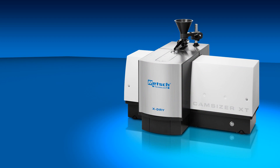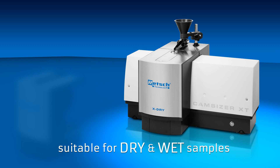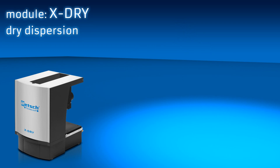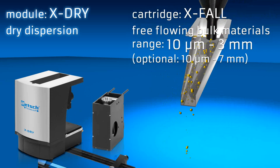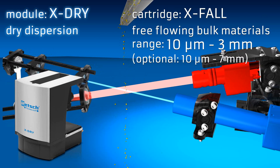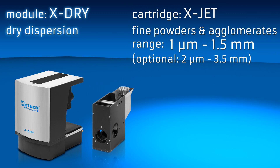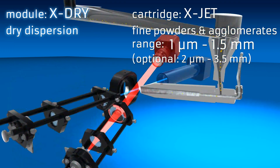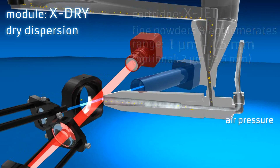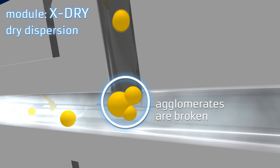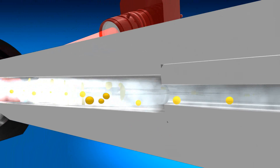The CamSizer XT is suitable for dry and wet samples. It offers two modules with three different methods of sample dispersion. The Dry Dispersion Module X-Dry can be equipped with two different cartridges. The Gravity Dispersion Cartridge X-Fall is used for pourable and free-flowing bulk materials in a size range of 10 micrometers to 3 millimeters, and the whole sample can be recovered. The High Pressure Cartridge X-Jet is suitable for fine powders and agglomerating samples in a size range from 1 micrometer to 1.5 millimeters. The pressure cartridge disperses the sample material by air pressure, and the strong air stream ensures that agglomerates which would falsify the measurement results are broken before they enter the measurement area.